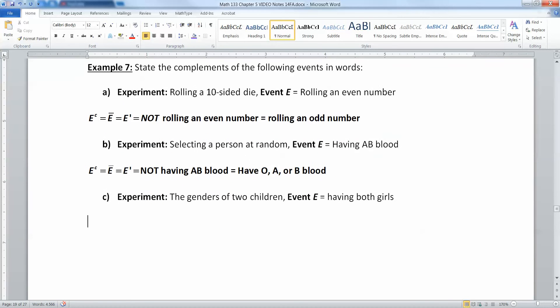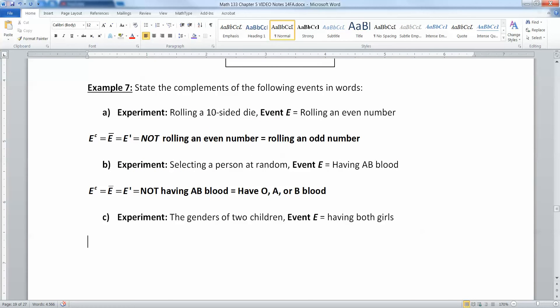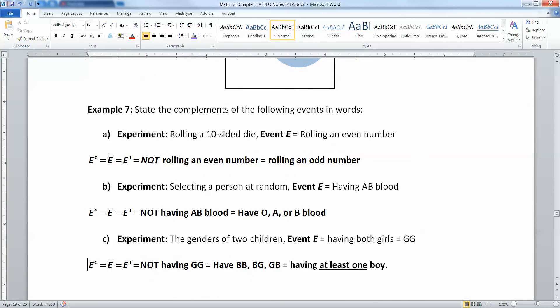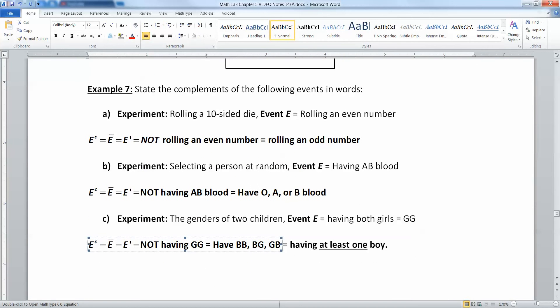What about having two children, their genders? So event E is having both girls, that would be girl, girl. So the complement of that would be not having girl, girl. That means that you have boy, boy, boy, girl, or girl, boy. One of those three. Realize what that means. That means that you're having at least one boy. Because if you do not have girl, girl, you have at least one boy. That terminology is going to come back to haunt you.